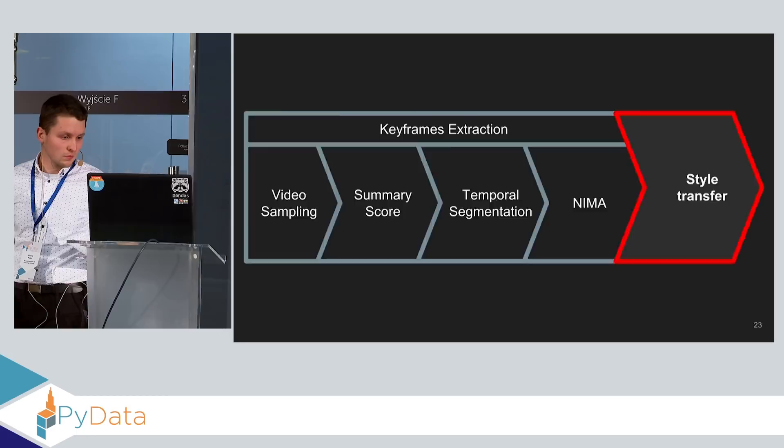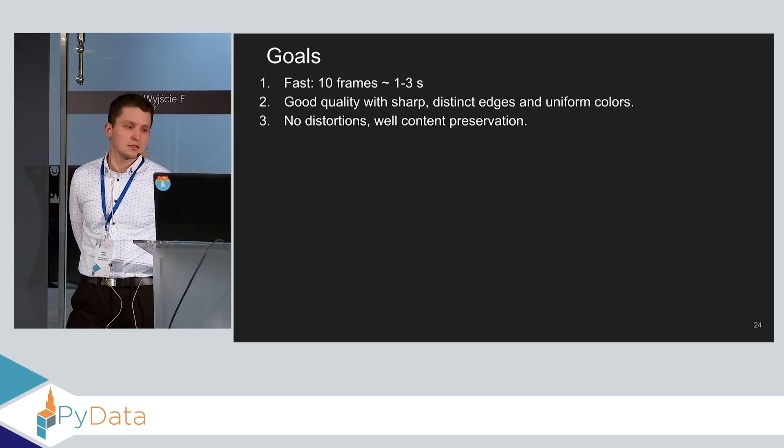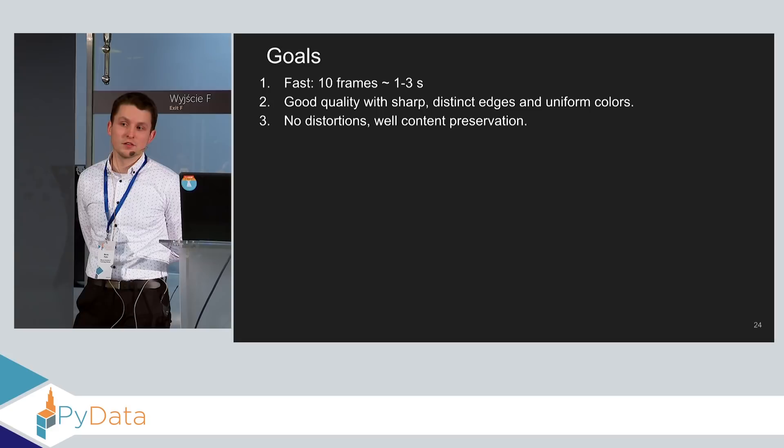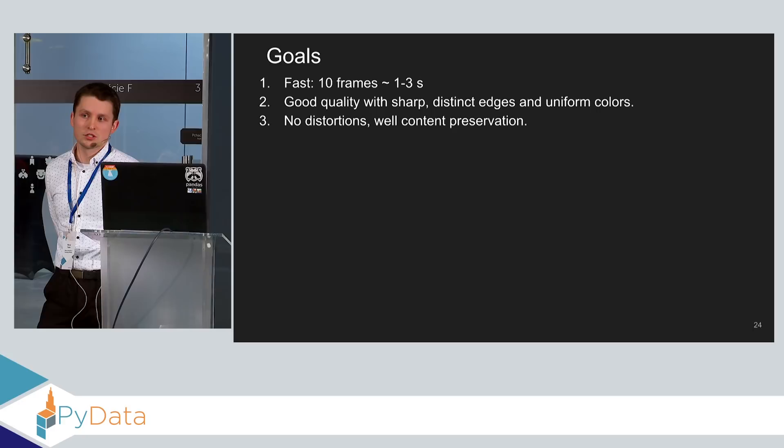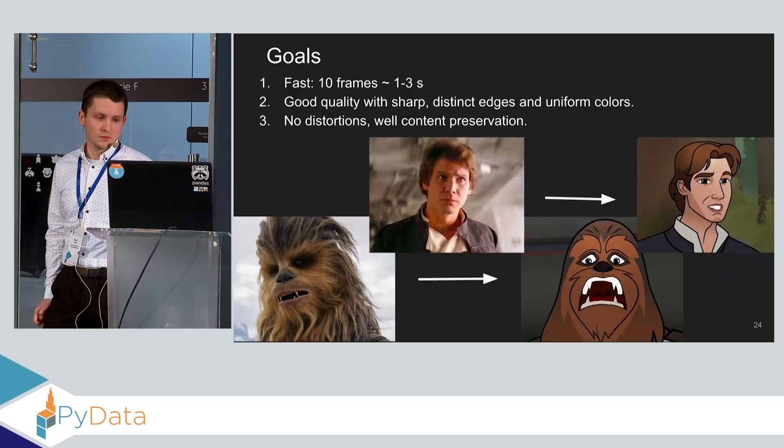Let's go to the second part of our presentation, which is style transfer. Our goal was to have solution that will work in real time. So we wanted to process those 10 frames in about one to three seconds. The second goal was to get good quality with sharp distinct edges and uniform and vivid colors. And the third goal was to have no distortions and well content preservation in the final images. For such example images, we would like to have something like this in a perfect solution.